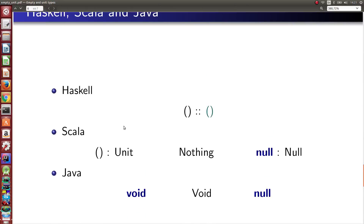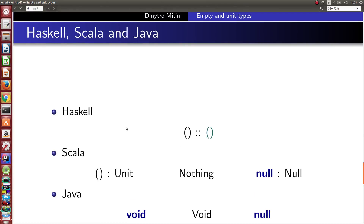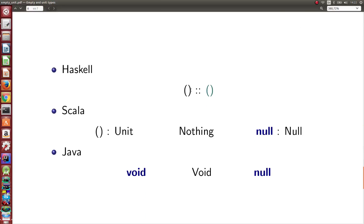There are some types and values in Haskell, Scala, and Java that are similar to empty and unit types. In Haskell there is unit type with its only value, the unit value. In Scala there is also unit type with its only value, type Nothing without any elements, and type Null with its only value null. In Java there is primitive type void without any elements, class Void with a capital V without any elements, and the well-known null reference.